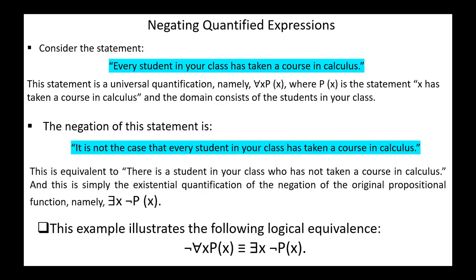Next, negating quantified expressions. Consider the statement: every student in your class has taken a course in calculus. This statement is a universal quantification, namely for all x, P(x), where P(x) is the statement 'x has taken a course in calculus,' and the domain consists of the students in your class. The negation of this statement is: it is not the case that every student in your class has taken a course in calculus. This is equivalent to: there is a student in your class — which is simply the existential quantification of the negation of the original propositional function, namely exists x, not P(x).